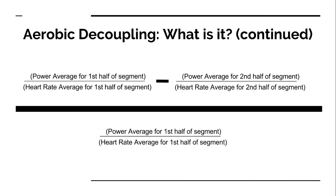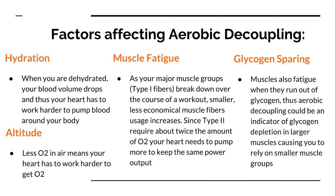You will sometimes get negative numbers, which we'll see later. Those are most likely influenced by environmental factors like temperature or not warming up enough. But typically you'll see numbers between zero percent and 20 percent.